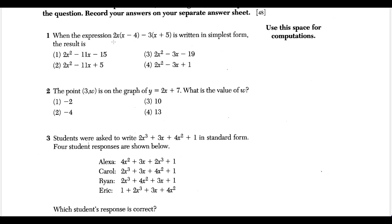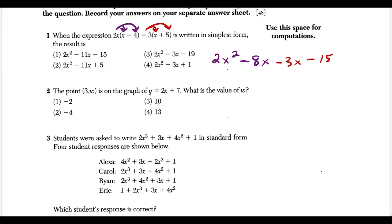For the first question, we want to know when this expression is written in simplest form. We distribute: 2x times x gives us 2x squared, 2x times negative 4 gives us negative 8x. Then distribute the negative 3 to both terms: negative 3x and negative 15. Combining like terms, negative 8x minus 3x gives minus 11x. So the final answer is 2x squared minus 11x minus 15, which matches choice one.